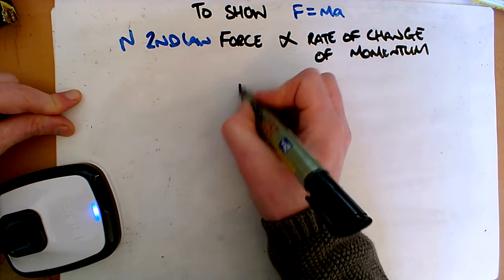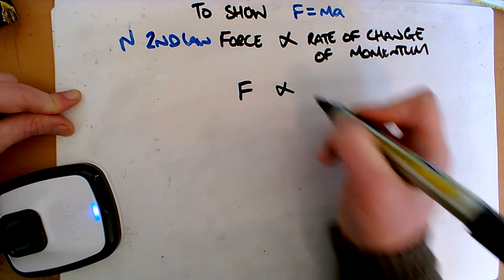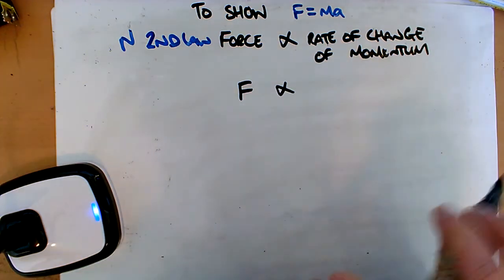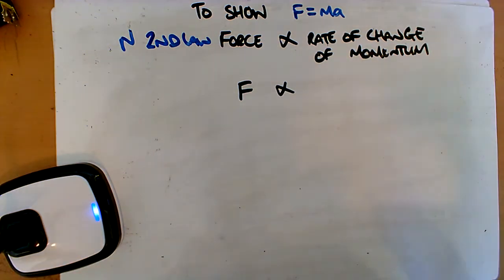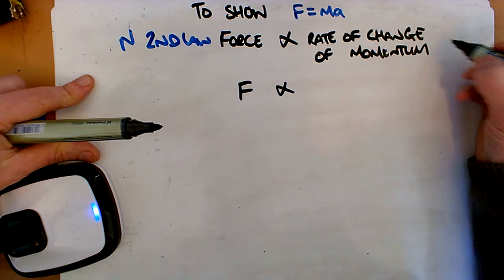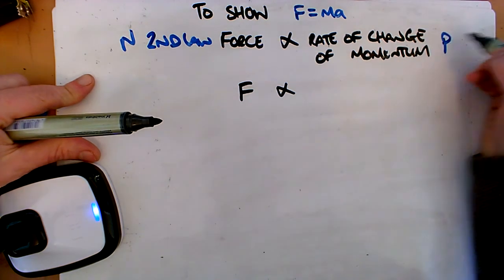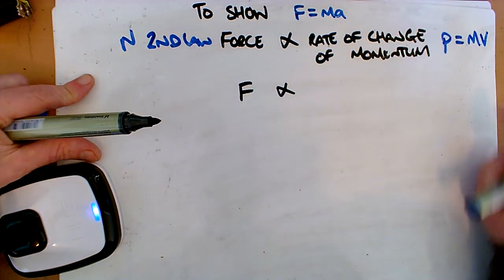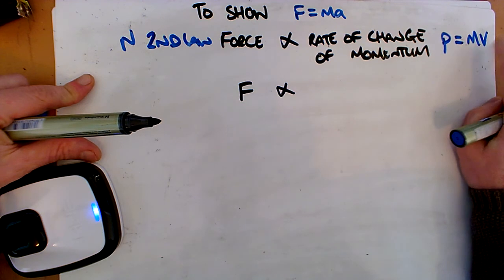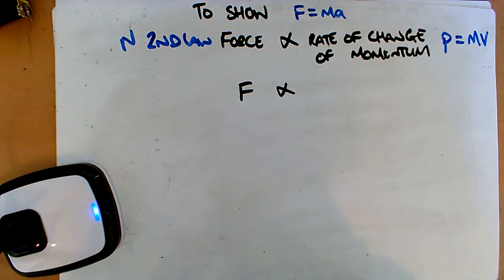We know force is F, and that's proportional to the rate of change of momentum. We should remember what momentum is. Momentum is just P is equal to Mv, so it's the mass multiplied by the velocity.